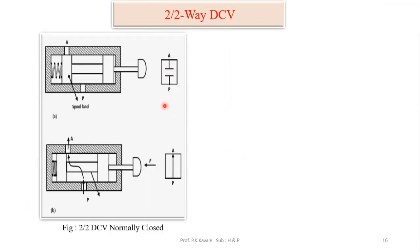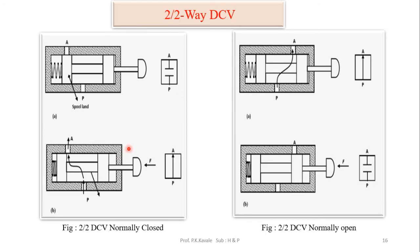A 2/2 DCV has 2 ports and 2 positions. The ports are the pressure port (P) and actuator port (A). In the normally closed position, P and A ports are closed. When pushed, the A port opens and flow diverts from P to A. In the normally open version, during non-operating condition the pressure port and actuator port are connected; to disconnect them, force must be applied.